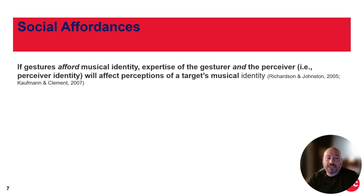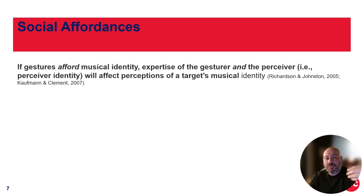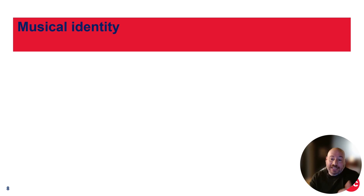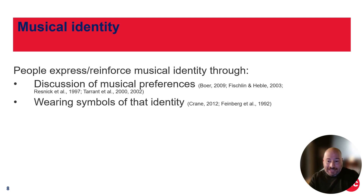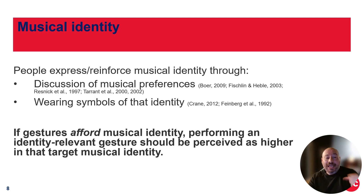So these social affordances lead to specific hypotheses. For example, if gestures afford musical identity, the expertise of the gesture and the perceiver will matter, and they're going to affect the perception of the target's musical identity. So if you yourself are a hard rock enthusiast, you're going to perceive the movements of individuals differently than someone who does not have that expertise. Musical identity is a concept often wrapped up with the idea of social identity — a way of indicating to others your group membership. People can express and reinforce these through discussion of musical preferences and wearing symbols, but we want to go purely based on gestures. So we're going to look to see if gestures afford musical identity: performing an identity-relevant gesture like headbanging should be perceived as higher in the target's musical identity — if you're headbanging, you should be someone who likes hard rock and metal.